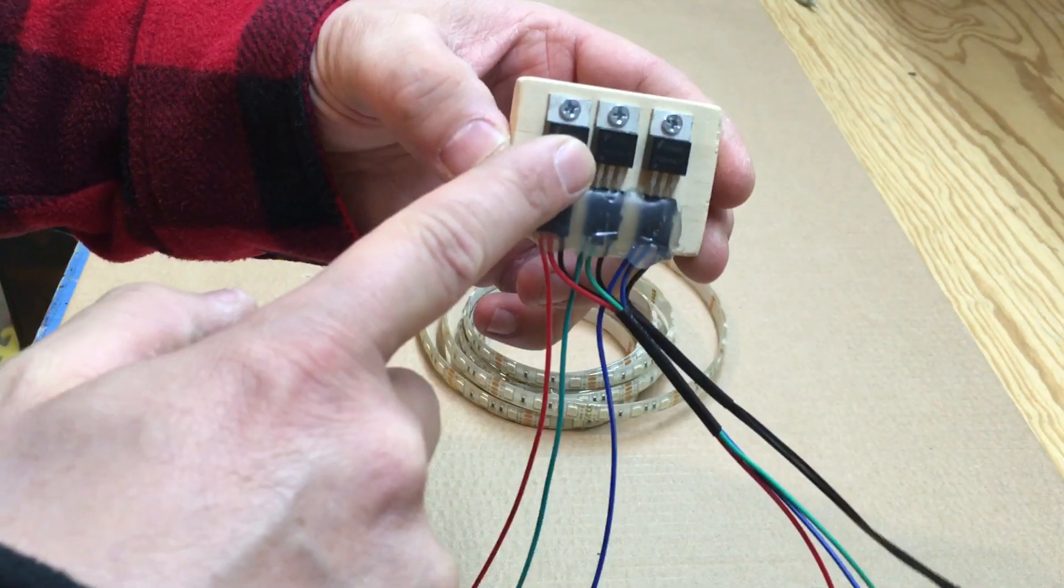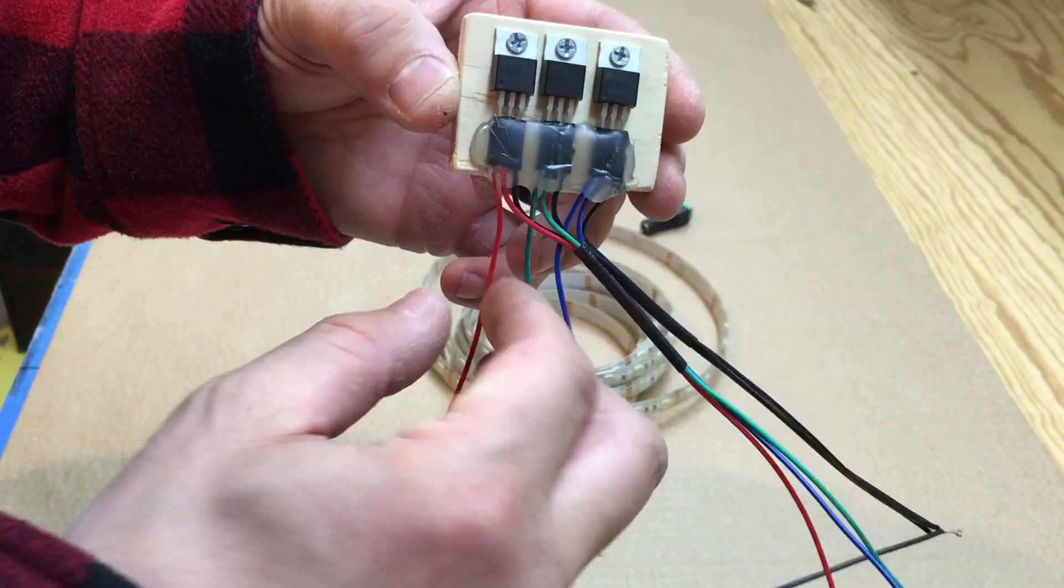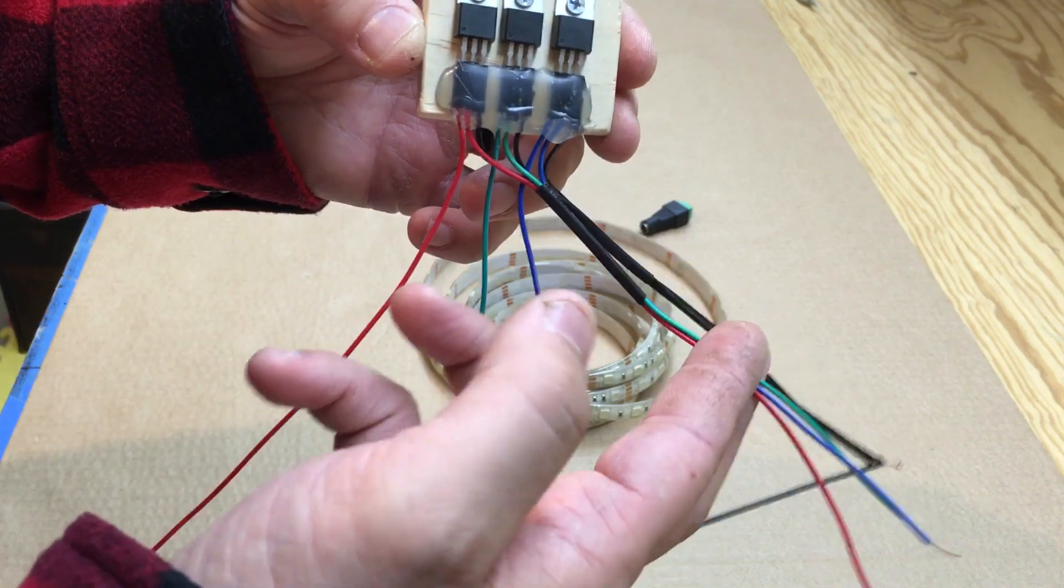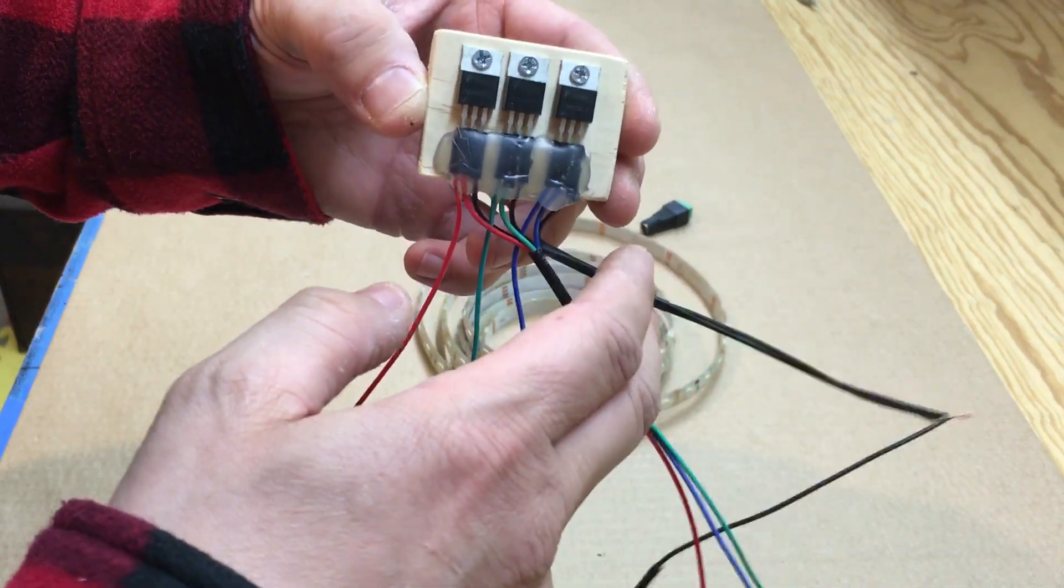If you're looking at the front of it like this, from left to right, the first wire goes to the Pi, the second wire goes to the LED strip, and the third wire is your ground wire.